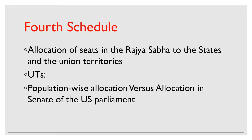The fourth schedule deals with the allocation of seats in the Rajya Sabha to the states and the union territories. The representation of states in the Rajya Sabha is done on the basis of population, so the state with maximum population will have maximum representation. This is in contrast to the system in the United States of America, where their upper house — the Senate — has two members from each state. But in India, the Rajya Sabha has members proportional to the population of each state.